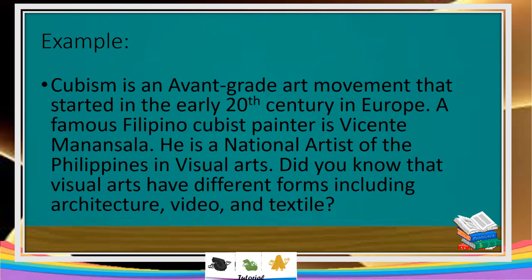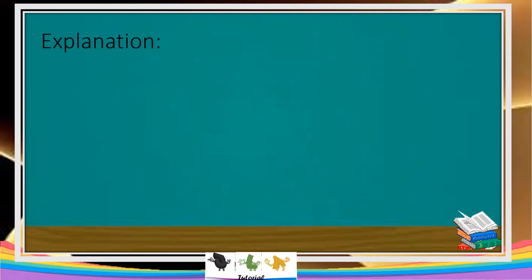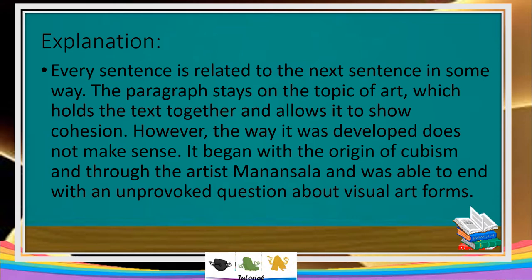Take for example: 'Cubism is an avant-garde art movement that started in early 20th century in Europe. A famous Filipino Cubist painter is Vicente Manansala. He is a national artist of the Philippines in visual arts. Did you know that visual arts have different forms including architecture, video, and textile?' Every sentence is related to the next in some way. The paragraph stays on the topic of art, which shows coherence. However, the way it was developed does not make sense — it began with the origin of Cubism, introduced artist Manansala, and ended with an unprovoked question about visual art forms.